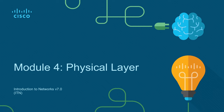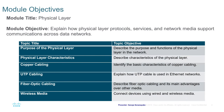Welcome back to the Cisco Introduction to Networks lecture series. Today we're going to focus on module number four, which is looking at the physical layer of the OSI model. The objective of this module is to explain how physical layer protocols, services, and network media support communications across data networks. We will look at how you can describe the purpose and functions of the physical layer, physical layer characteristics, copper cabling, UTP cabling, fiber optic cabling, and wireless media.